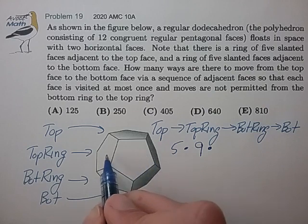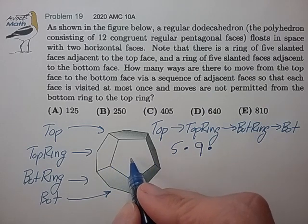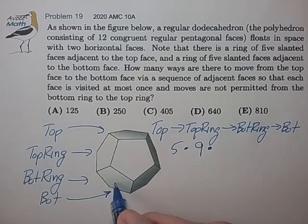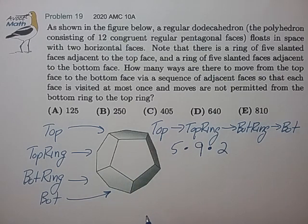Now once we've exercised that degree of freedom on the top ring, we can choose to go to the bottom ring in one of two ways. We can bend a little to the right, or we can bend a little to the left. So two choices there.